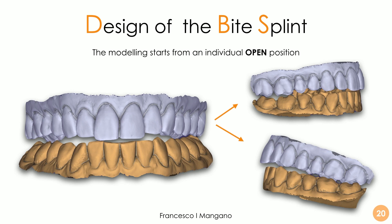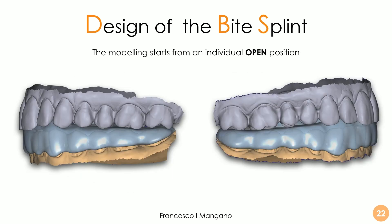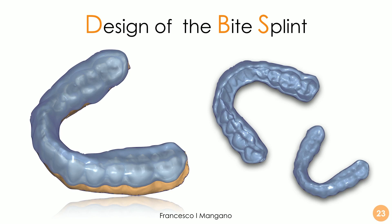It's a position that the patient has during the movement — it's completely natural. And here with dynamic bite splint modeling, frame by frame, the dental technician can clearly and accurately check all the contacts and design the bite accordingly. It is a bite that will need zero adjustment when it is delivered to the patient, when it is applied clinically. Here the lateral view, right and left view, and here the bite itself.